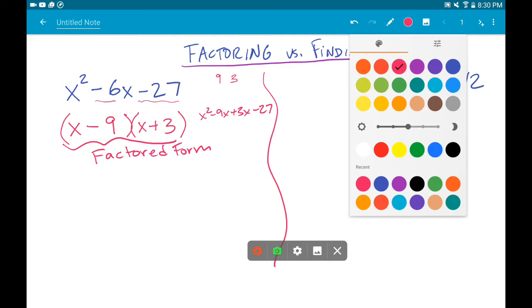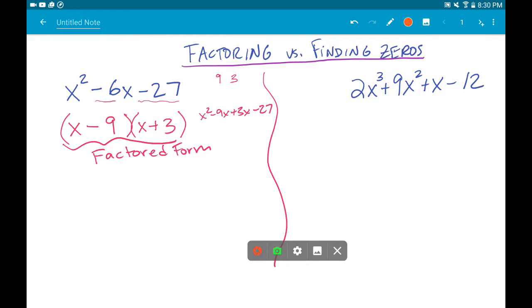And so when it says that, what it's really asking is, when is this function equal to zero? And if this function factored is this, the question's really asking, when are these factors equal to zero? Hence the expression, find the zeros.